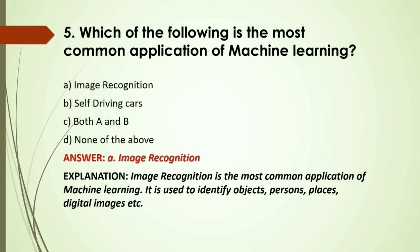MCQ: Which of the following is the most common application of machine learning? A) Image recognition; B) Self-driving cars; C) Both A and B; D) None of the above. Answer: A, image recognition — it is the most common application of machine learning, used to identify objects, persons, places, and digital images.